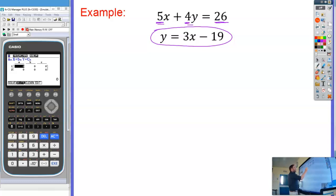So in order to rearrange this, I'm simply going to add 19 to both sides, and I get Y plus 19 equals 3X. Then I'm going to take away the Y and I get 19 equals 3X minus Y. And then I'm just going to swap those two round and I get 3X minus Y equals 19.